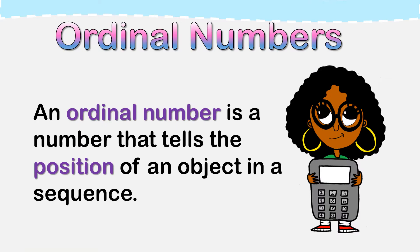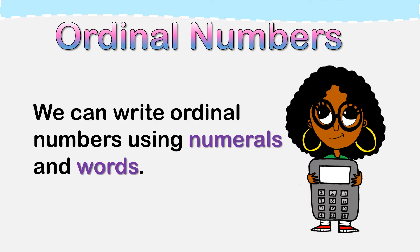What is an ordinal number? An ordinal number is a number that tells the position of an object in a sequence. We can write ordinal numbers using numerals and words.